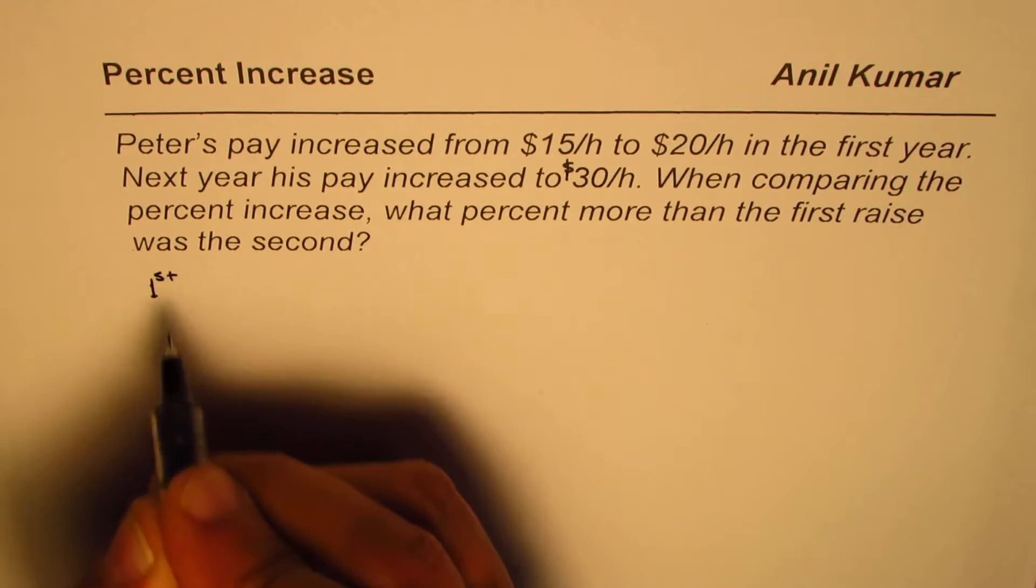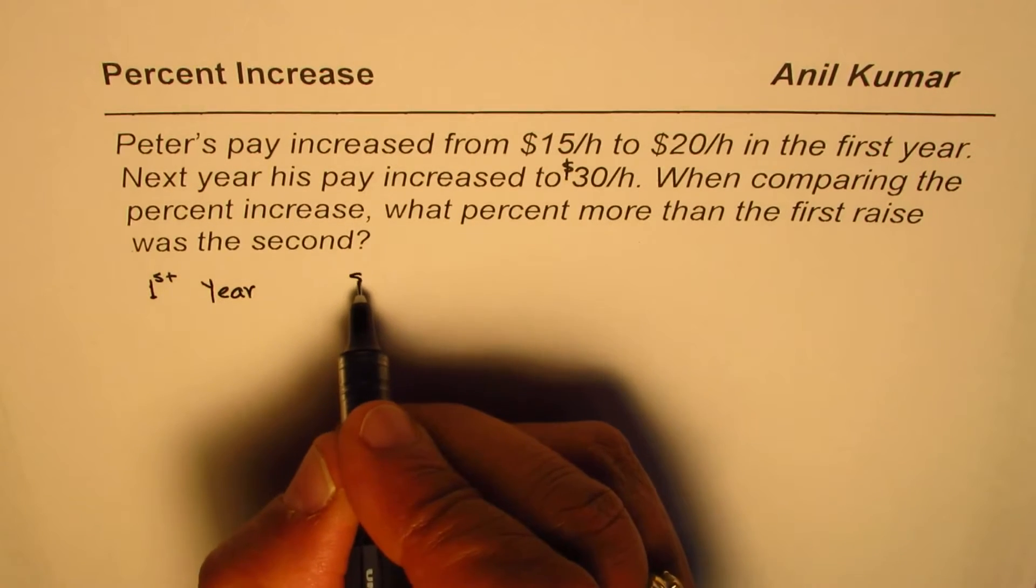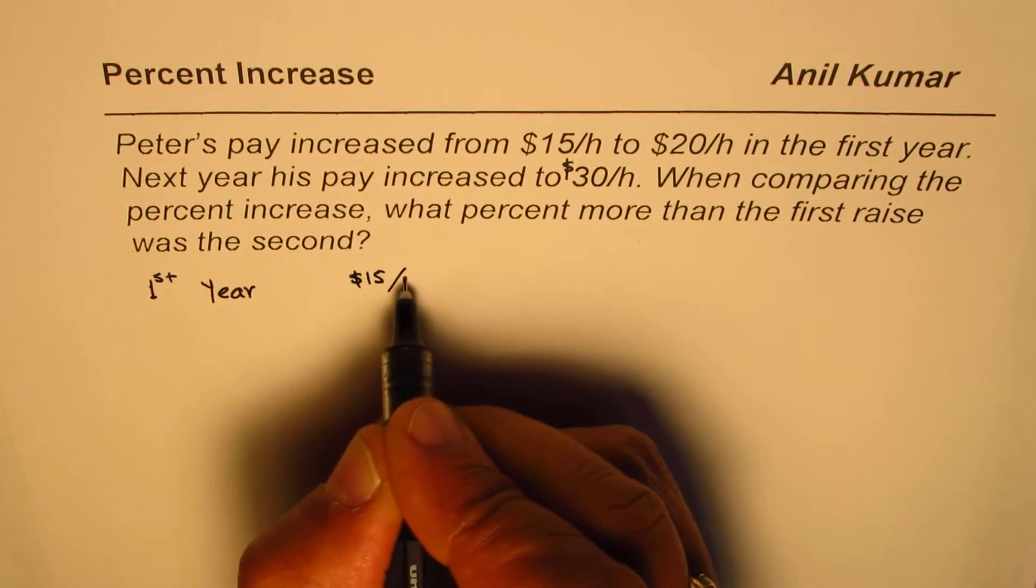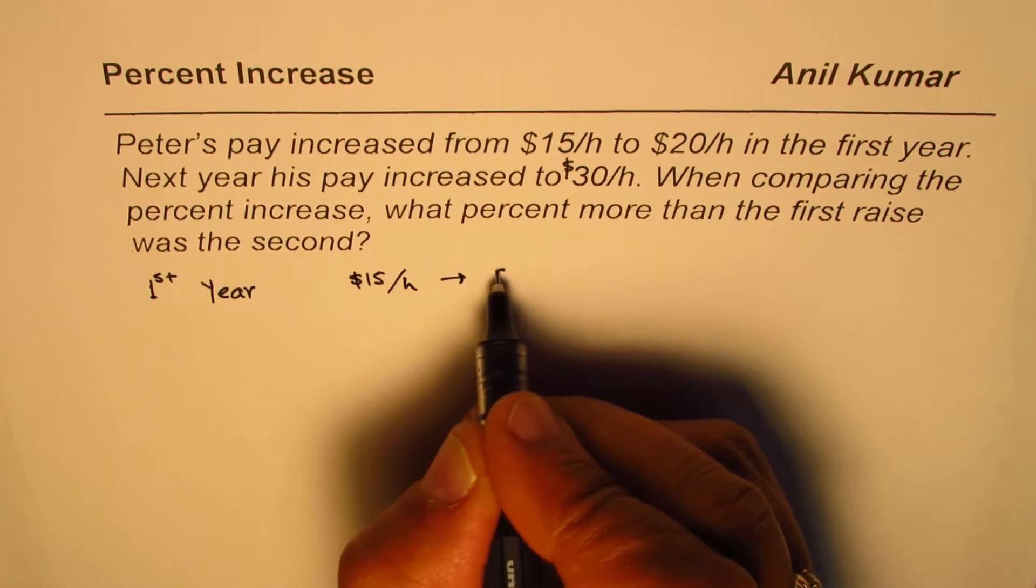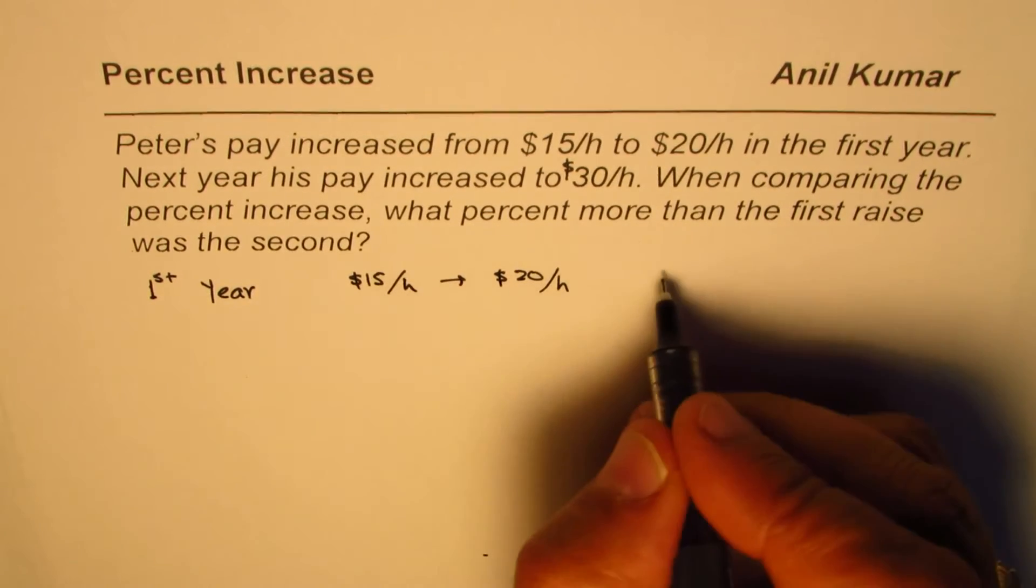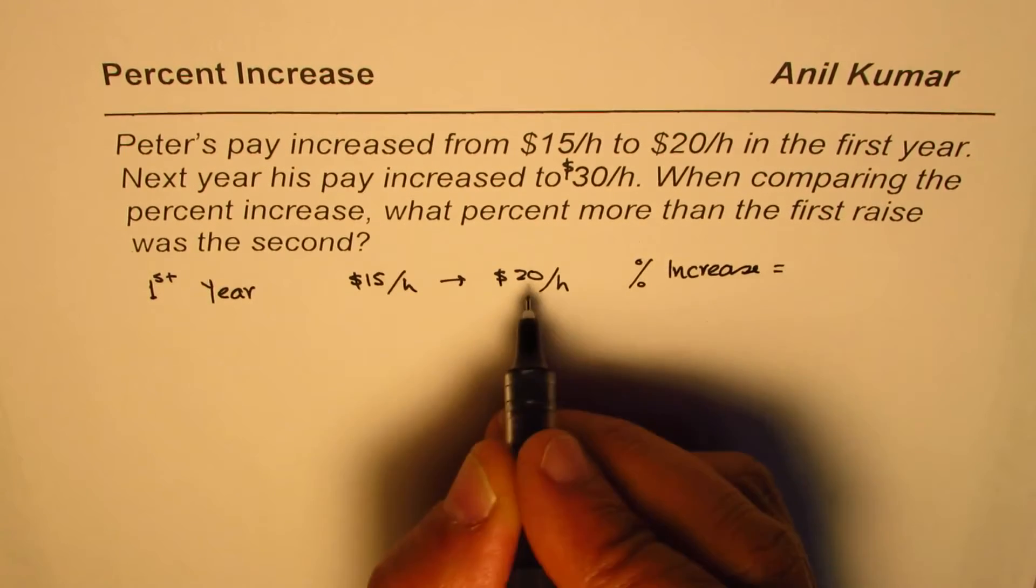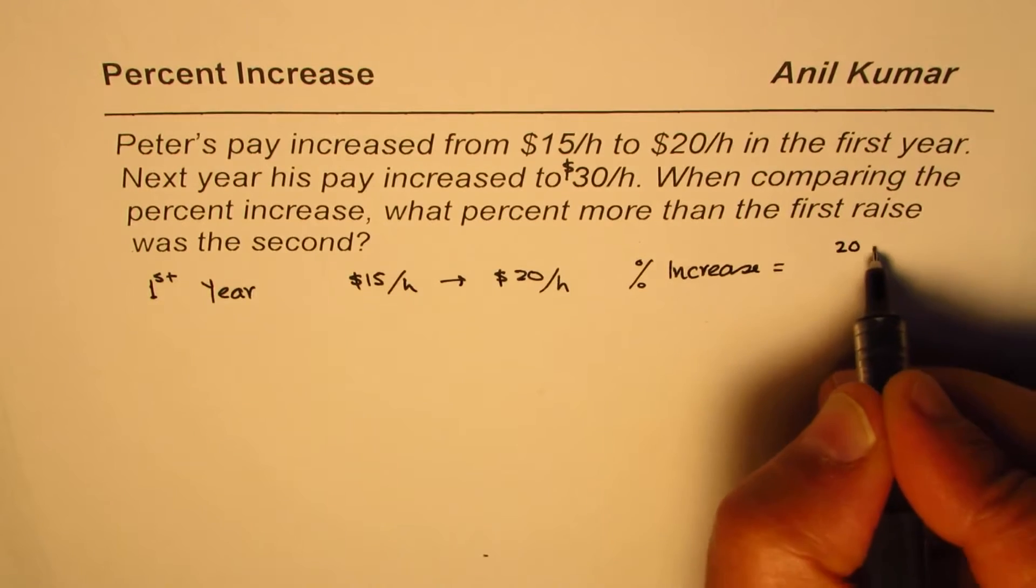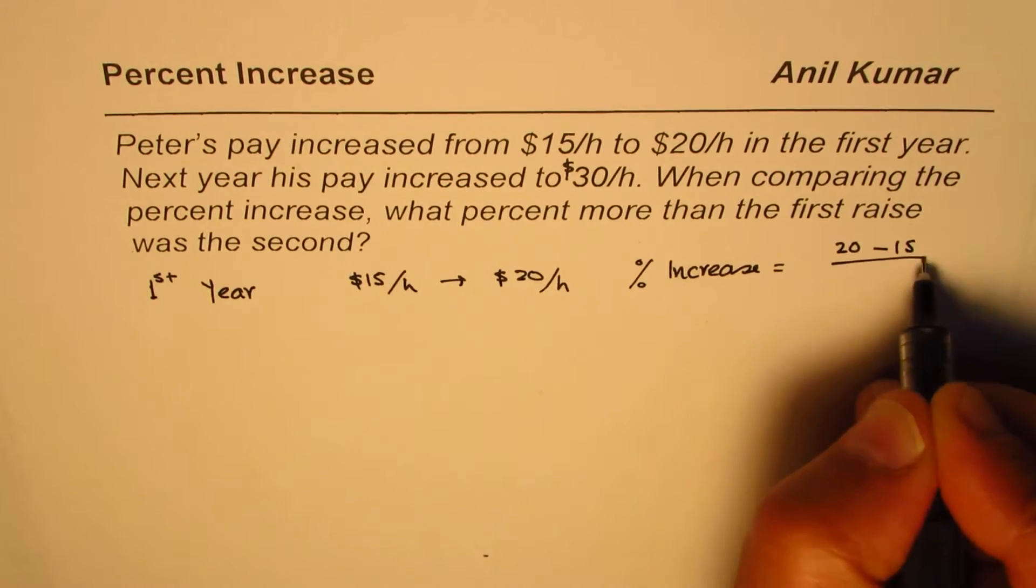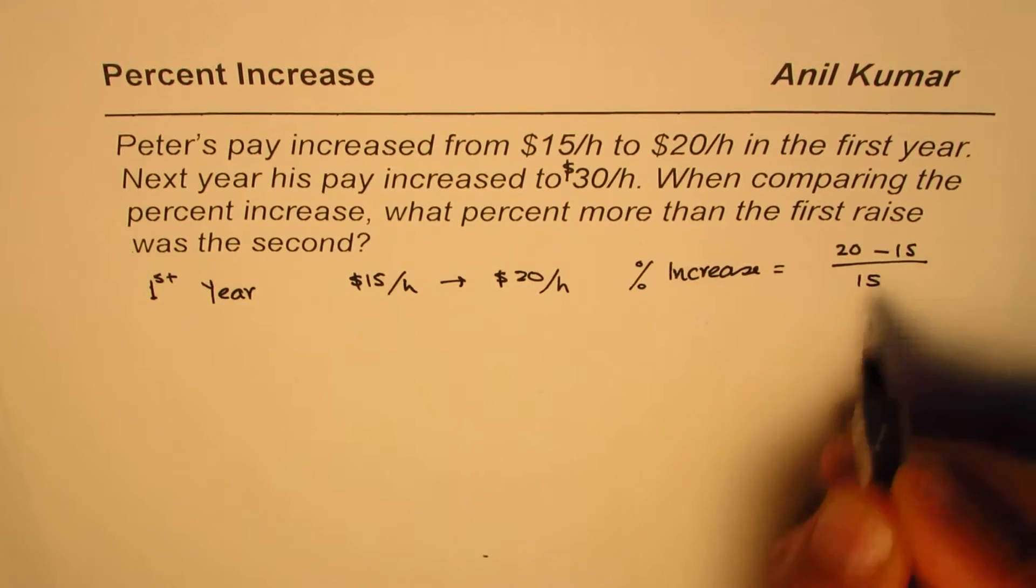So the first year it increases from $15 per hour to $20 per hour. Percent increase here is change which is 20 minus 15 divided by original amount which is 15, so which is 5 over 15.